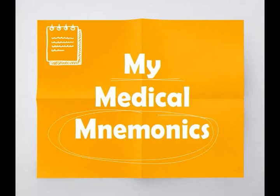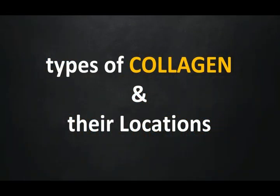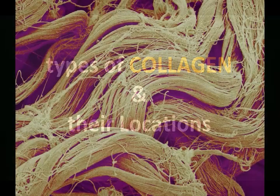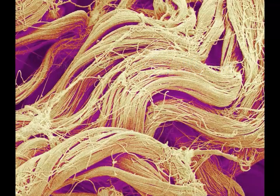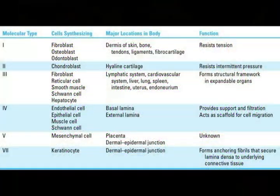Hello friends, welcome to the channel 'My Medical Mnemonics.' Now we are going to discuss a mnemonic to remember types of collagen and their locations. Collagens are structural proteins which are predominant in connective tissues like bone, tendon, ligament, and cartilage. An important fact is that there is not only one type of collagen — there are 28 types of collagen.